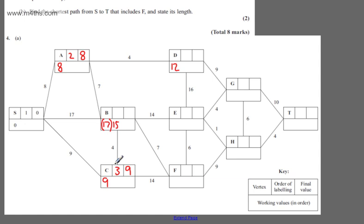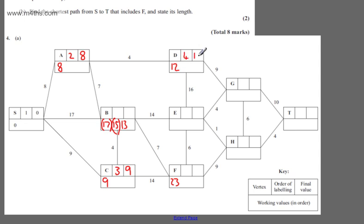We now consider all of the unconnected vertices we can reach directly from C. I can go to B: 9 plus 4 beats the 15, and we have a new working value of 13. We can go directly from C to F: 9 plus 14 is 23. This 13 tells me the shortest path from S to B is 13, going S to C to B. We now consider the lowest weight, which is 12. This becomes order 4 with a final value of 12. That tells me the shortest path from S to D is 12, going S to A to D.